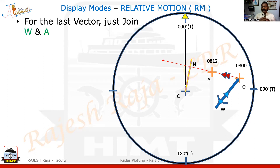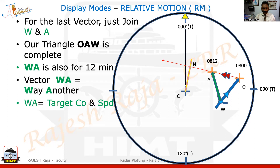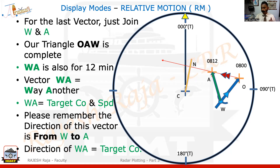The last side of the triangle remaining is WA. All I do is join them from W to A, and the triangle is complete. WA is again for 12 minutes. WA can be called 'way-another' — that is the course and speed of the target vessel. The direction is always from W to A. I can place my roller scale on this green color line, bring it to the center of the screen at Charlie, and measure the direction — that is the target course. The target course is approximately 350 or 340 degrees true.